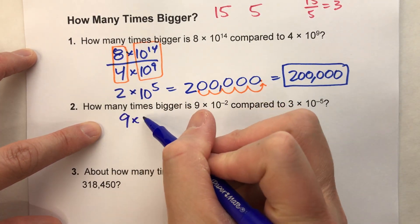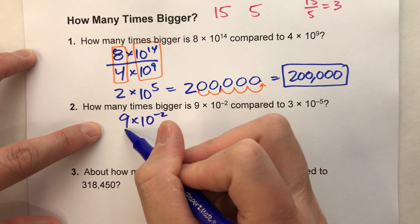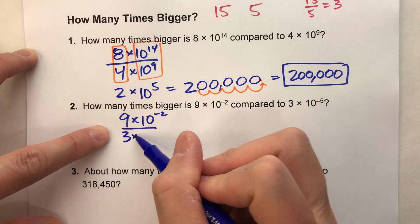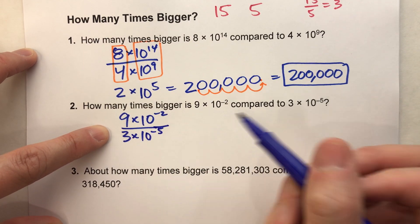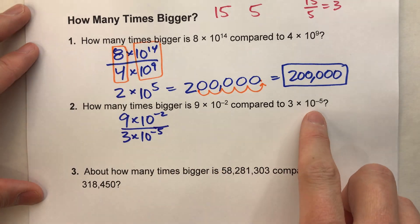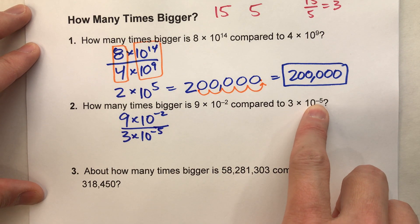So we'll take that 9 times 10 to the negative second power, divided by 3 times 10 to the negative fifth power. Now, at first you might think, well, this one must be bigger, because look at that power of 10 is a 5 instead of 2. But remember...